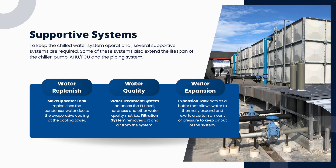Now let's talk about the supportive systems — the systems that keep the chilled water system operational and extend the lifespan of various components. The first is water replenishment. When the cooling tower cools down the condenser water, some of that water evaporates, causing the water level to drop. That's why we need a make-up water tank to hold water and automatically refill the cooling tower basin. When the basin level drops to a certain point, this water flows in to top it up.